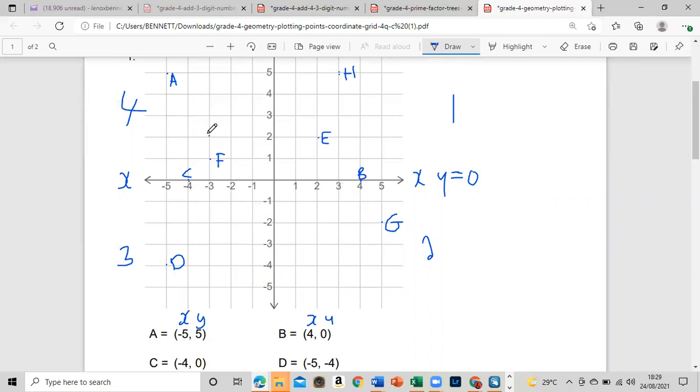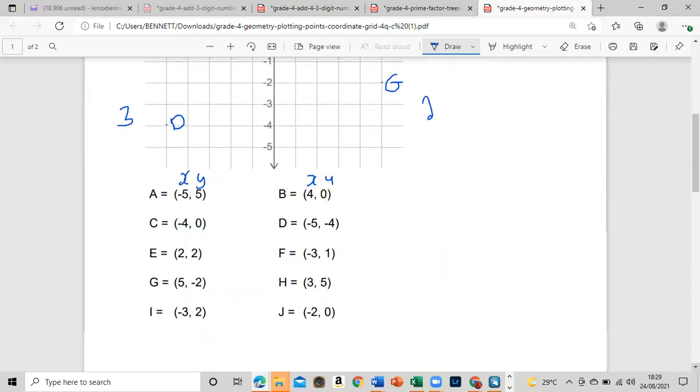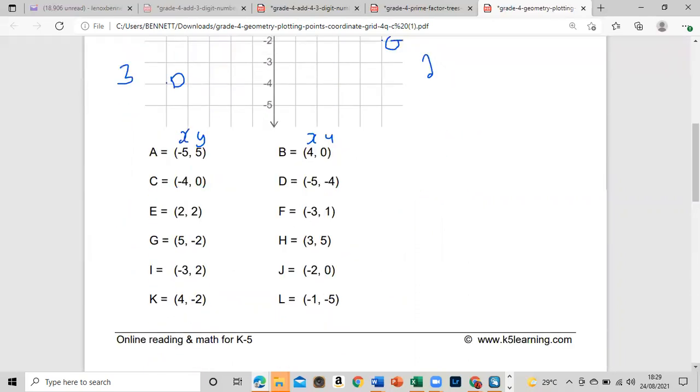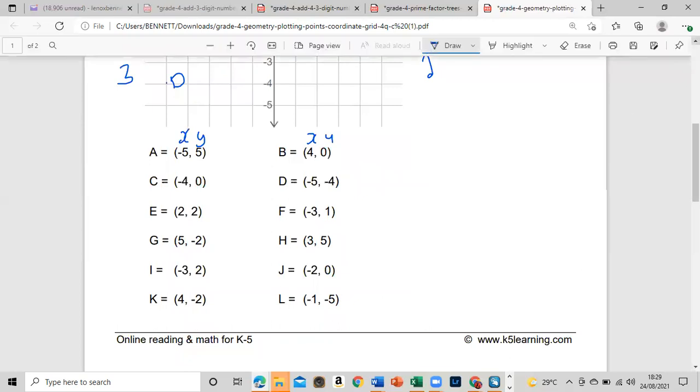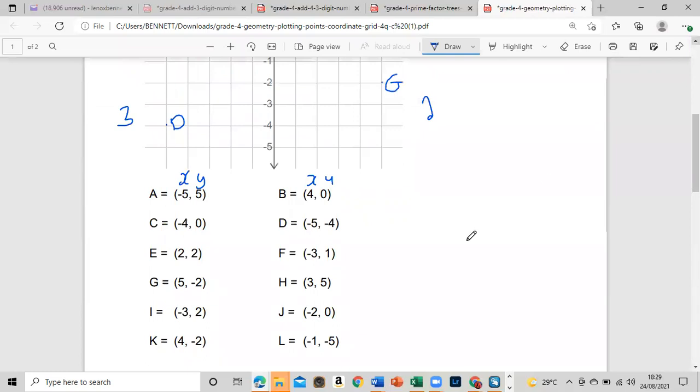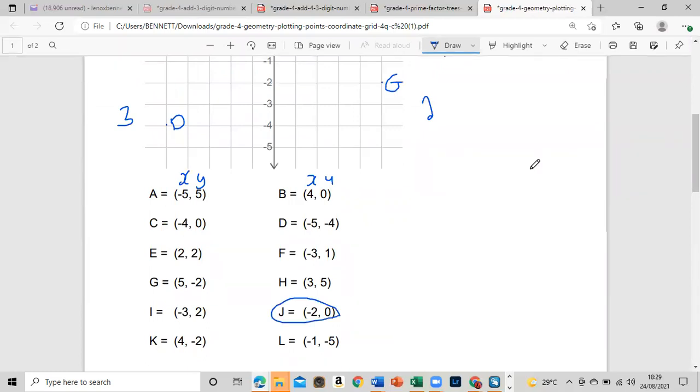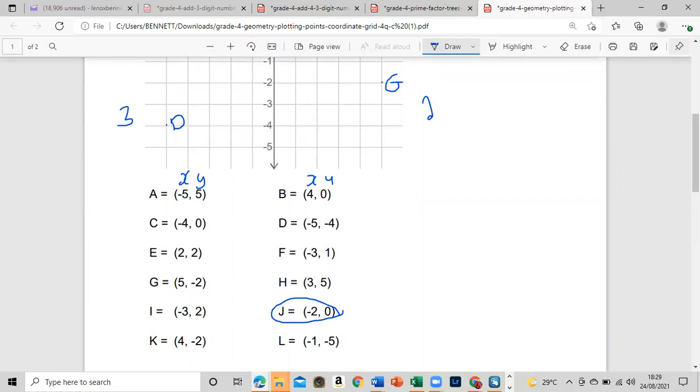The next one that I want you guys to do is this one. We're gonna do J: negative two, zero. Negative two, zero. This one right here is J, negative two, zero.